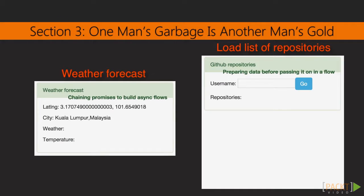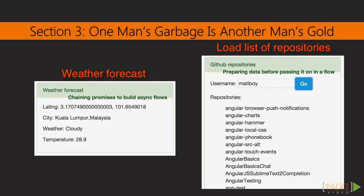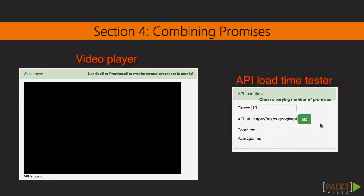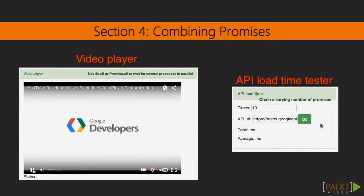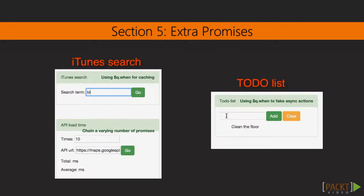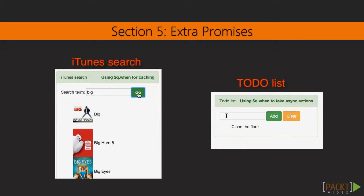We will continue with planning and executing asynchronous flows, including handling both successes and failures. All the while we will be using real-life examples, showing how each of the tools will actually help you develop your own applications. We will then learn to combine Promises into easily understandable and clearly coded processes. By the time we reach the last section, you will be perfectly comfortable with Promises and what they can do, and so we will learn more advanced tips and tricks that I've discovered through my experience with Promises.